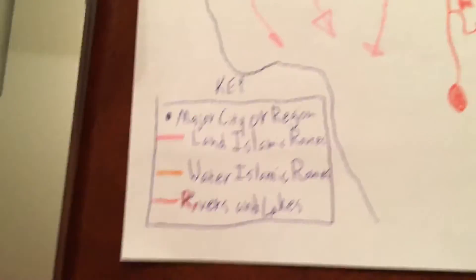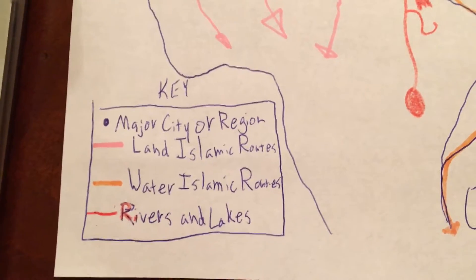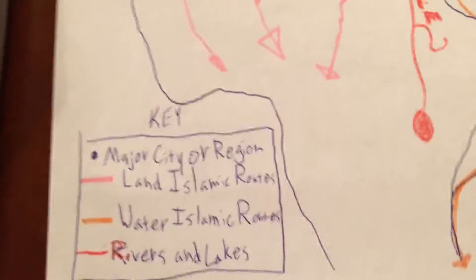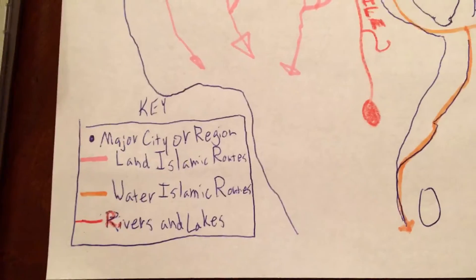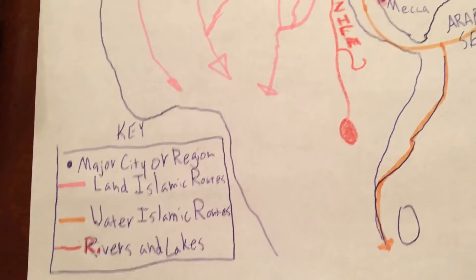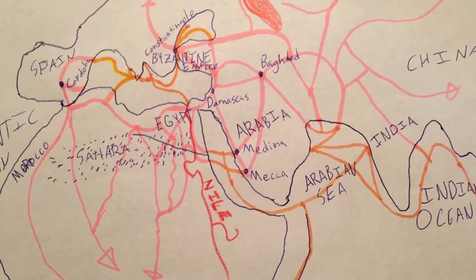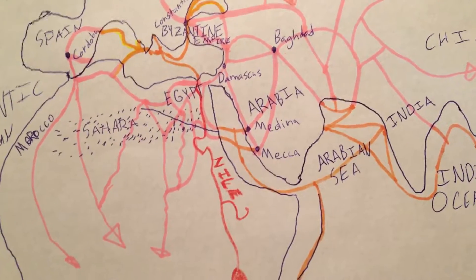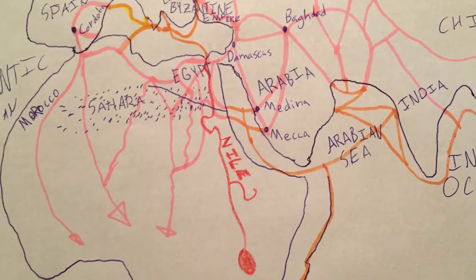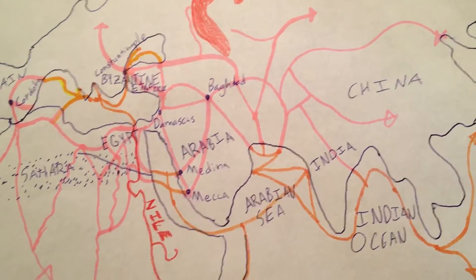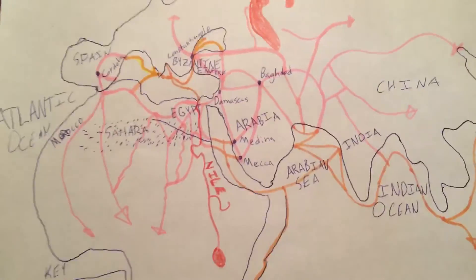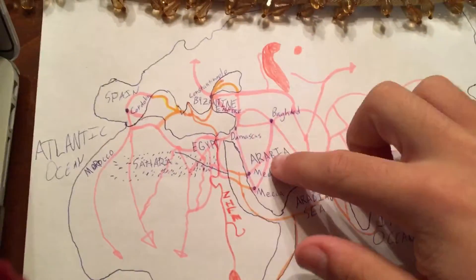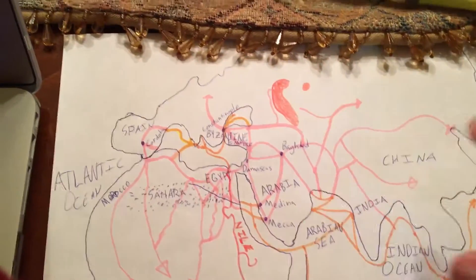Here's my key of all the different routes. The dots represent a major city such as Cordoba or Constantinople or Baghdad, and the pink lines represent the land routes for Islamic trade. These trade routes really helped Islam spread all through the eastern world, and Arabia had the best location since it's in the middle of all of the trade routes, so it can spread everywhere.